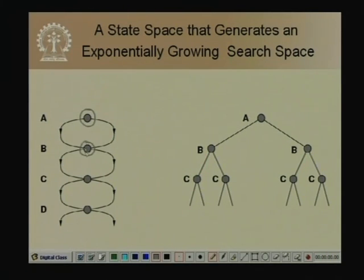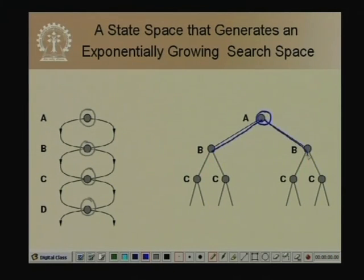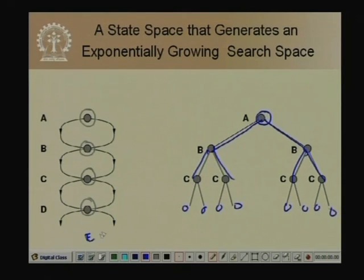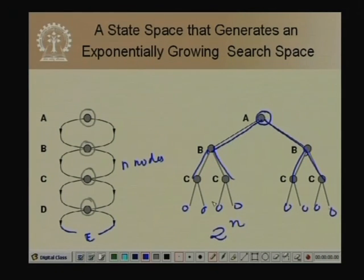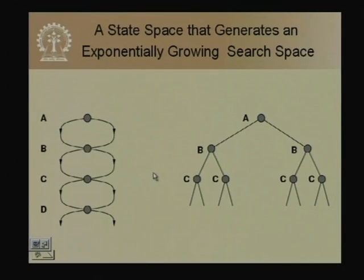For example, in a search graph with nodes A, B, C, D and two arcs between each pair, if we unfold this as a tree there would be 8 nodes corresponding to D, 16 corresponding to E, and so on. If we have n nodes this tree will have size on the order of 2^n — the search tree can be exponentially larger than the search space. Tree search methods are not efficient for such search spaces.